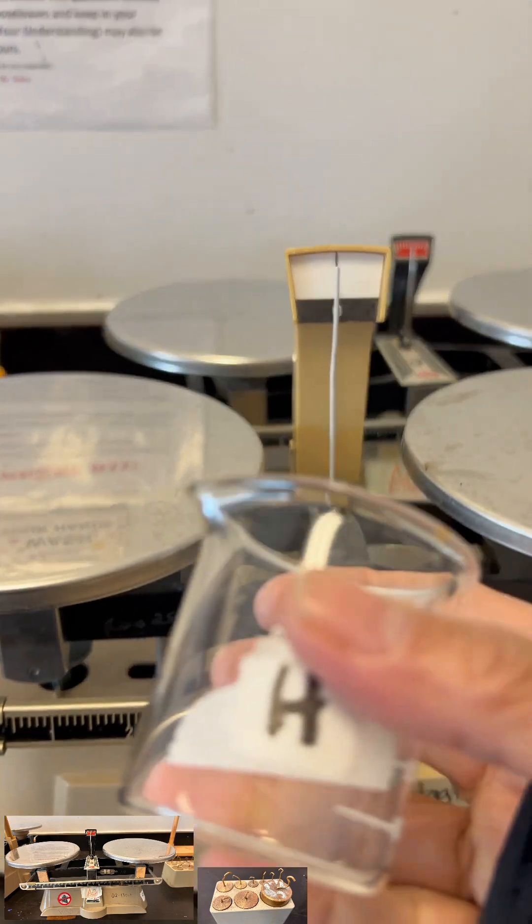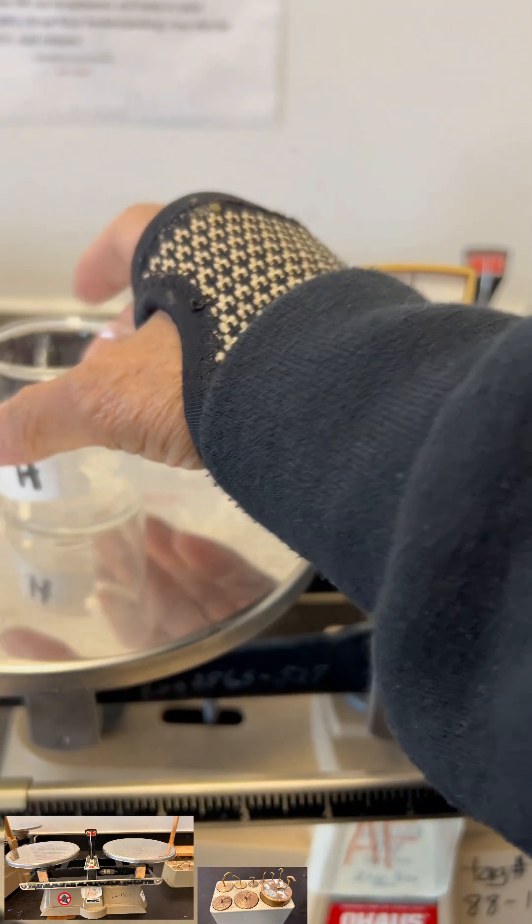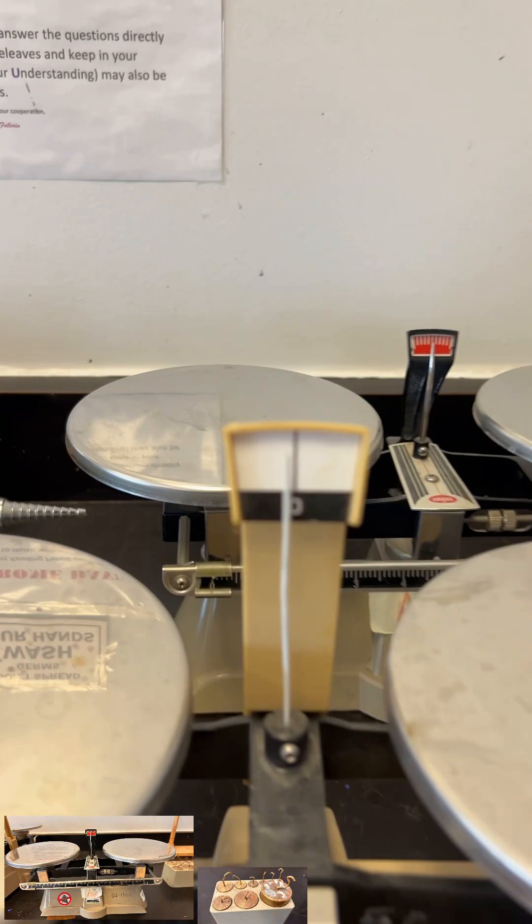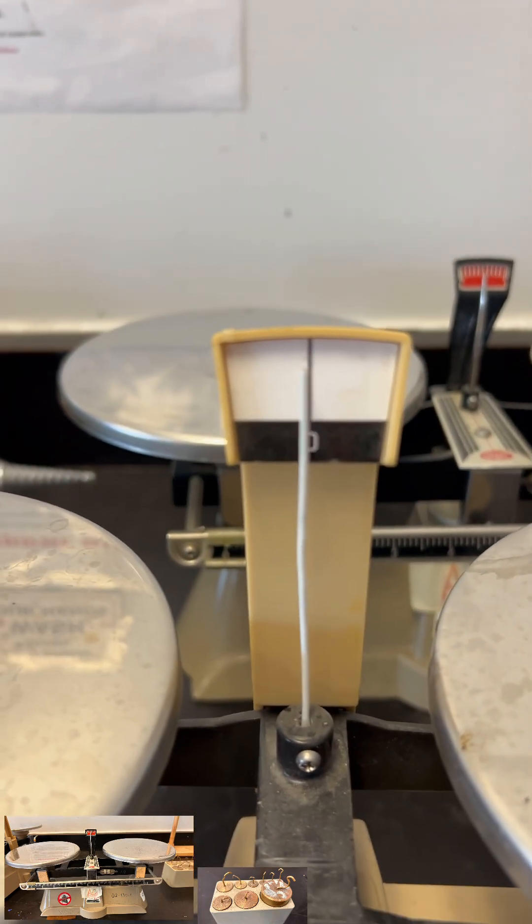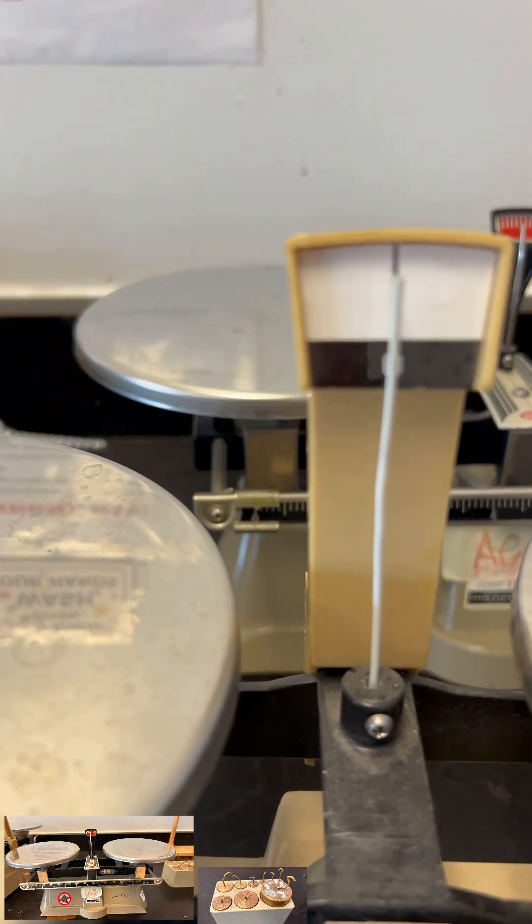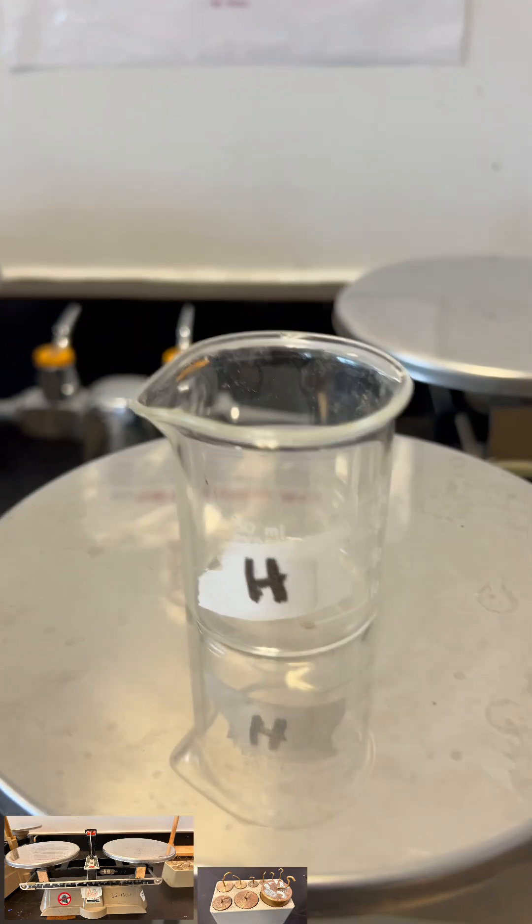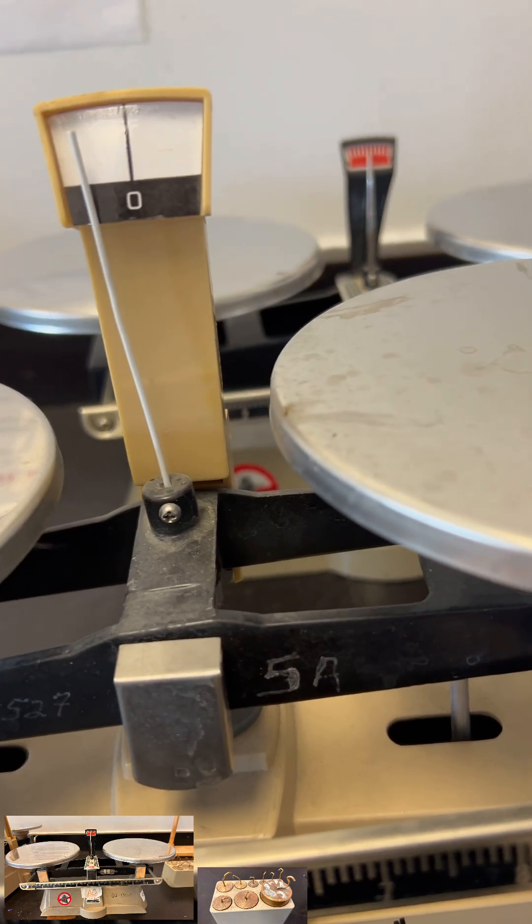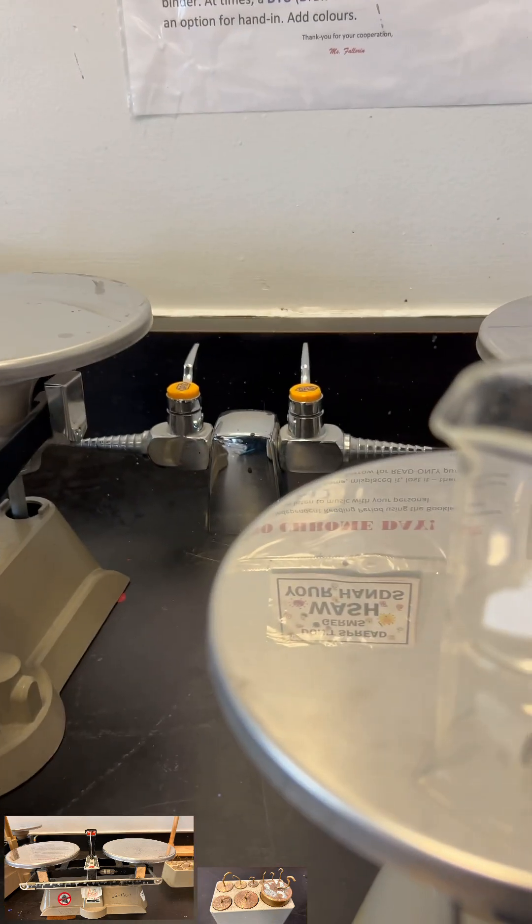Now let's weigh this small beaker. Of course, as always, we make sure that the needle point would be at the middle. So if I have this, for instance, again on the left hand side, you will notice that this is more than 10 grams. So what do we do now?